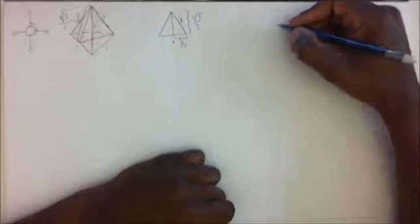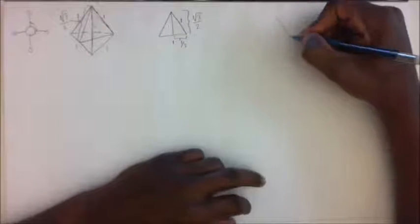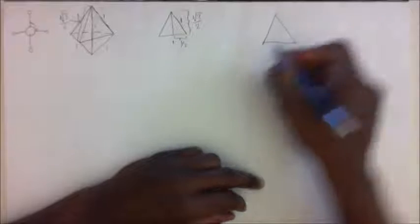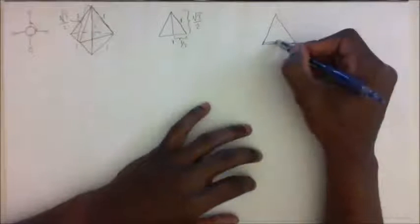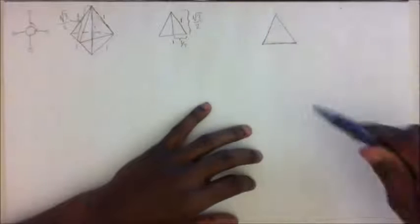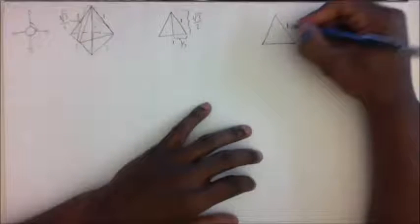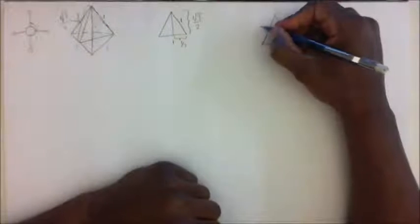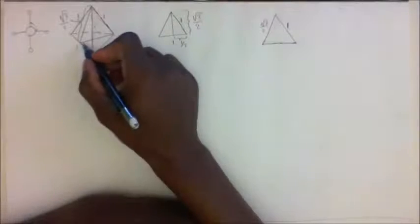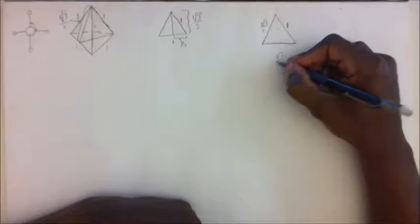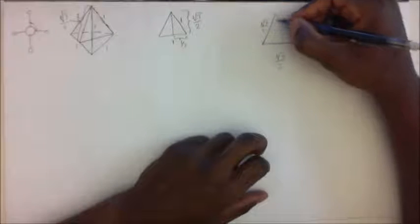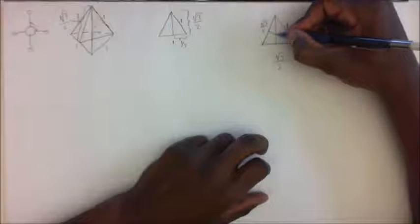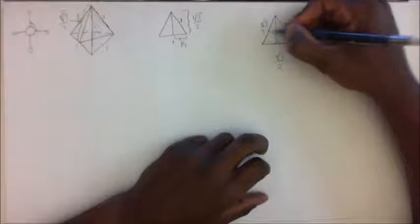We're going to open it up and look at the cross section. This side is equal to one — that's this side right here. And this line right here is the square root of three over two, and this at the bottom is also the square root of three over two. Now I will draw a line that intersects this bottom at a right angle, and I'll do the same for the other side. Those are right angles.